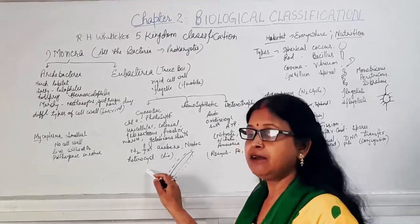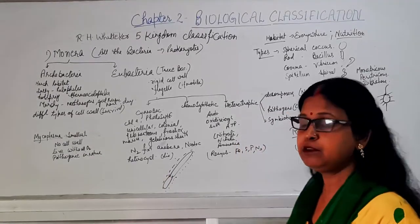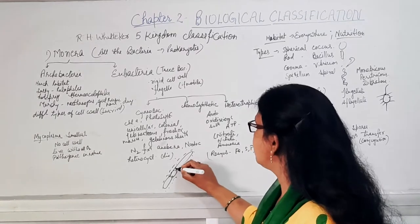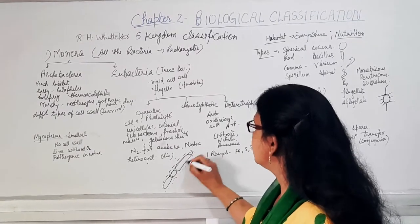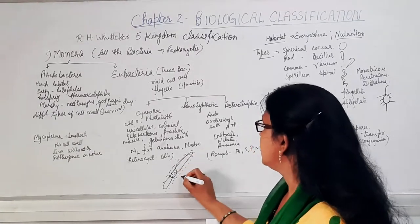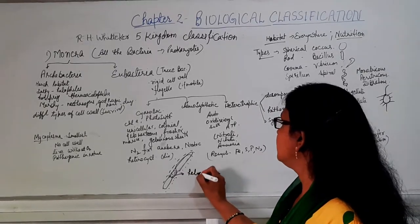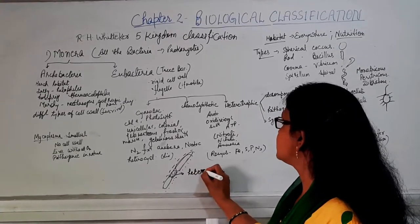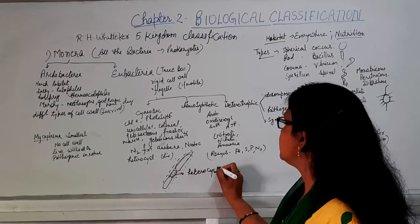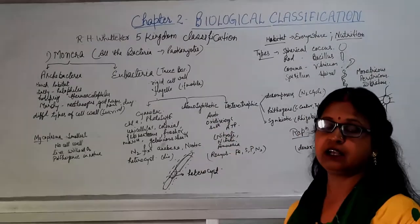Cyanobacteria have special cells called heterocysts located between regular cells, and these heterocysts help them in the process of nitrogen fixation.